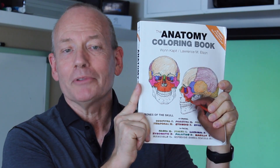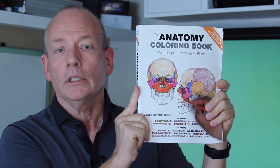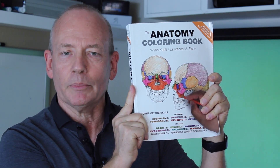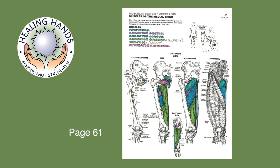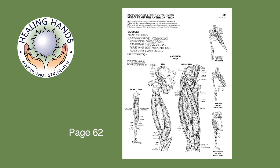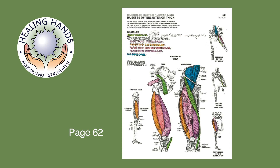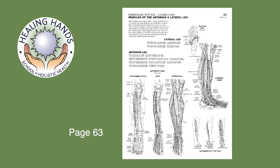The coloring book is another resource you'll use to learn anatomy for circulatory massage. On page 61 you have the adductors: pectineus, adductor brevis, adductor longus, adductor magnus, and gracilis. On page 62 you have sartorius and the quadriceps: rectus femoris, vastus lateralis, vastus medialis, and vastus intermedius. On page 63 you have tibialis anterior.